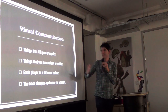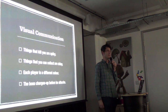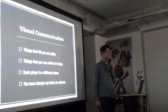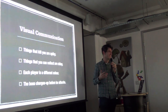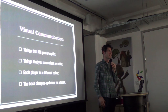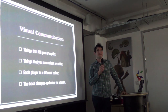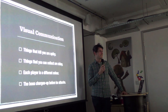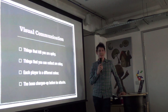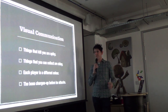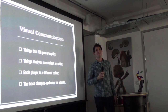Visual communication: things that kill you are spiky — you walk on one spiky thing, get hurt, see a new spiky thing, and you know without instructions not to touch it. Things you can collect are shiny. Each player has a different colour. The boss charges up before attacking — enemies telegraph their attacks with tells. In Punch-Out, a character blinks just before a certain attack, and that's great for the player — it's not just random. The player can read the situation and react.